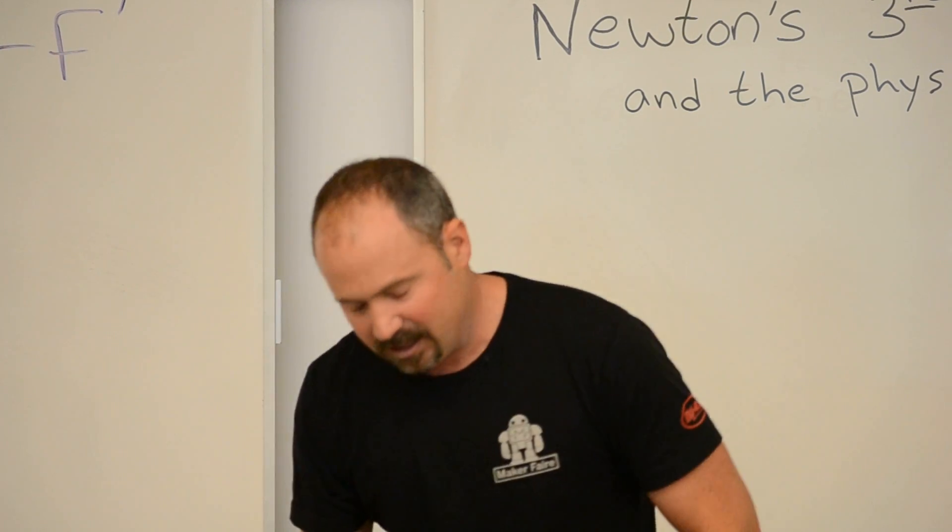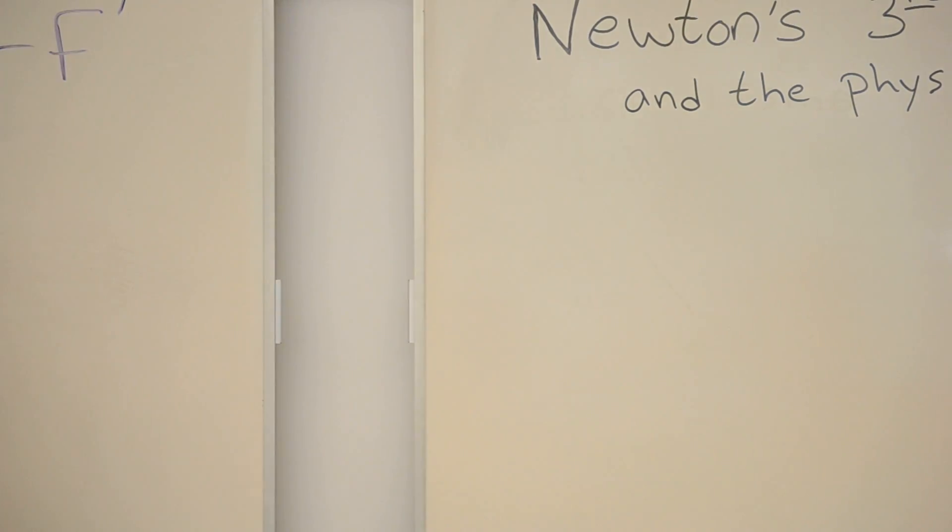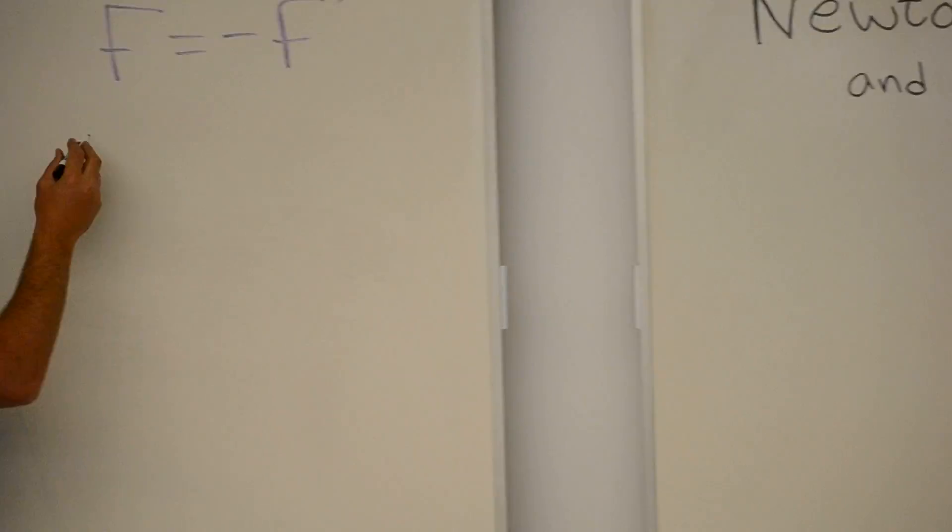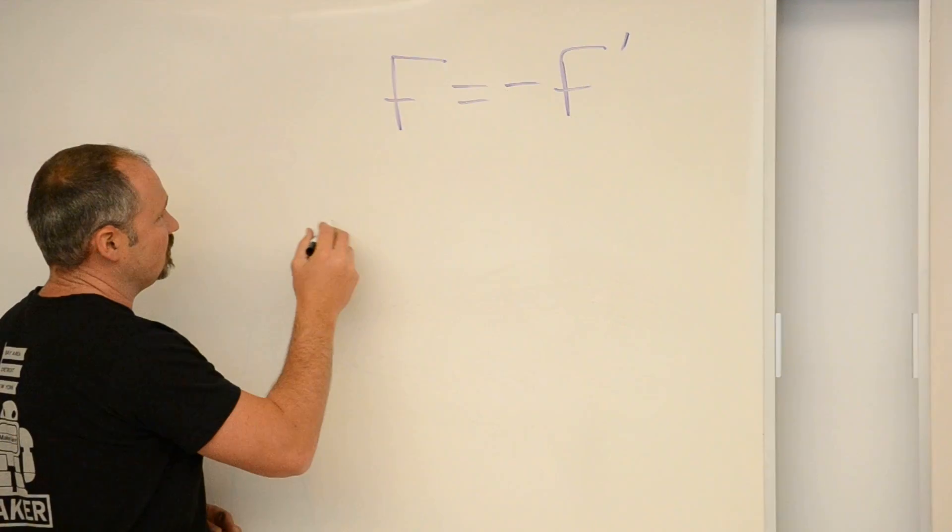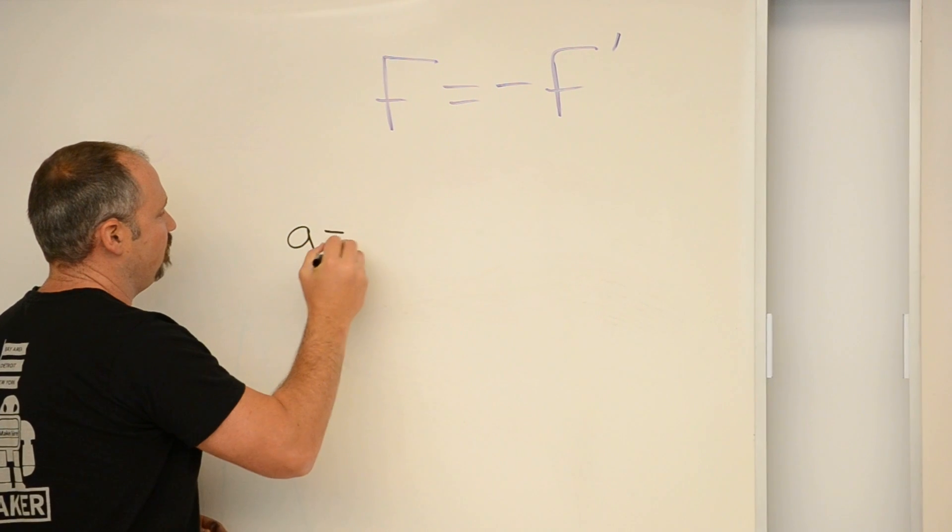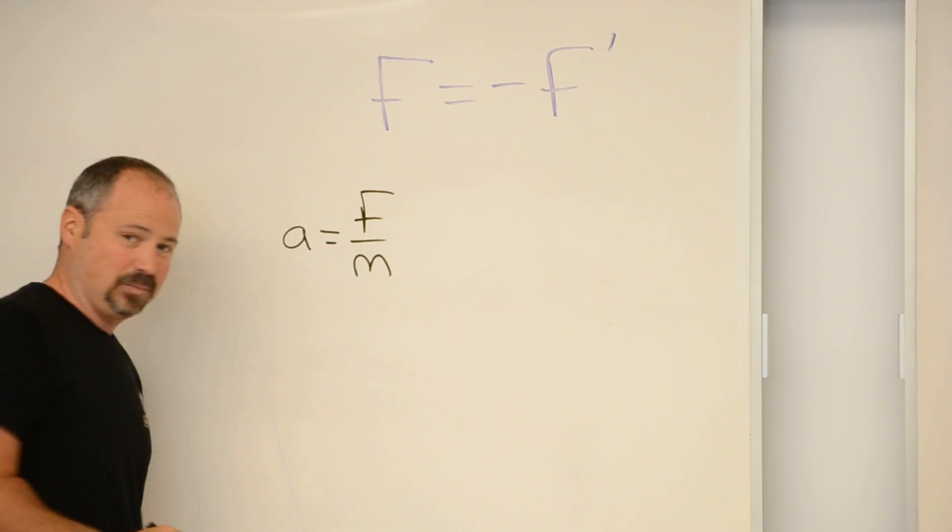Now, the pen obviously accelerates. The Earth does not accelerate. And the reason is, in this case, there's only one force. So the acceleration of the pen is equal to the force divided by the mass of the pen.